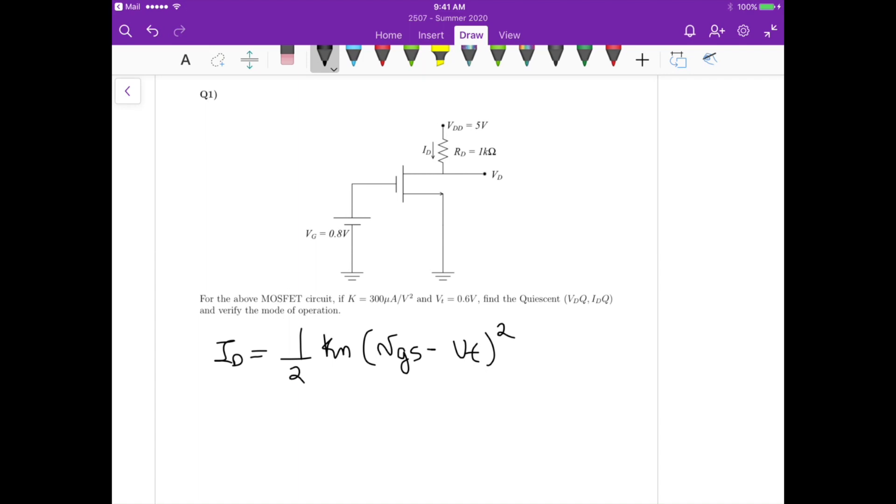And because we know that we have this source here grounded, and then we have Vg equals to 0.8 volts, we know that in this case Vgs, which is the same as Vg minus Vs, is going to equal 0.8 volts. And Vt we have from the problem statement, so we have everything we need to calculate Id.